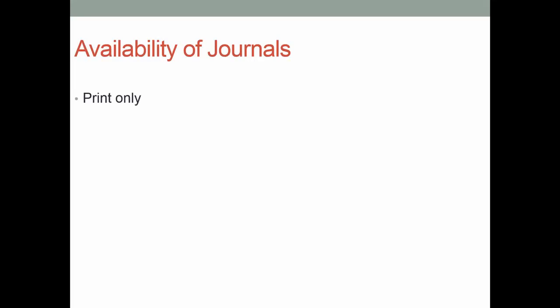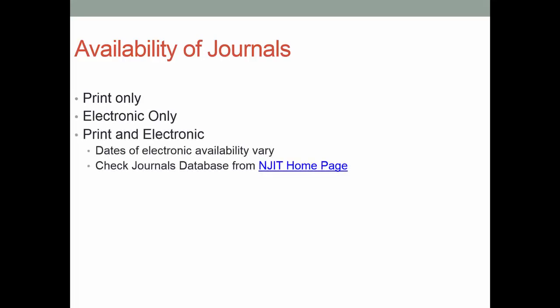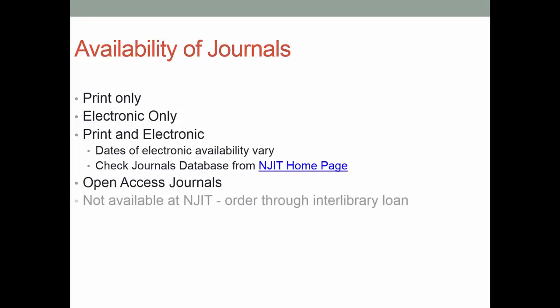The nice thing about Search All is you can limit by peer-reviewed and full-text availability at NJIT. Regarding journal availability — we don't get anything in print anymore, but some older ones are still available only in print. Electronic-only is the way we're going now. Sometimes a journal is available in print before a certain date and only in electronic format after. We also have an interlibrary loan service: any book or periodical article that you need that we don't have at the NJIT library, you can order through interlibrary loan.